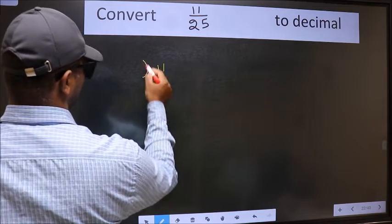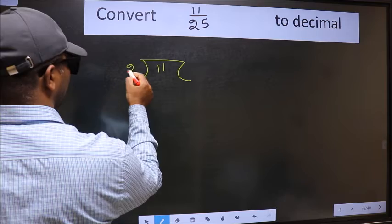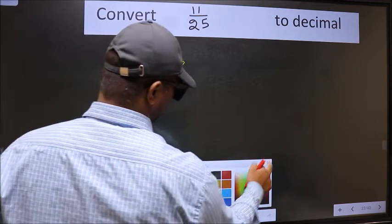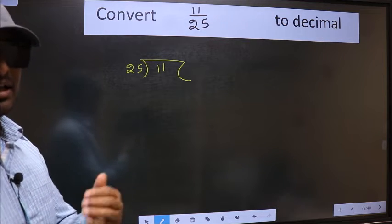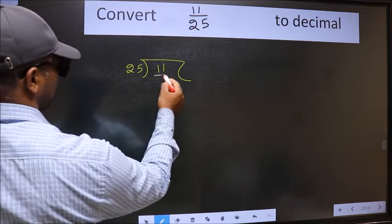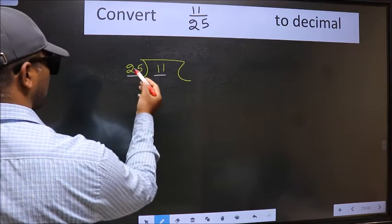11 here and 25 here. This is step 1. Next, here we have 11 and here 25.